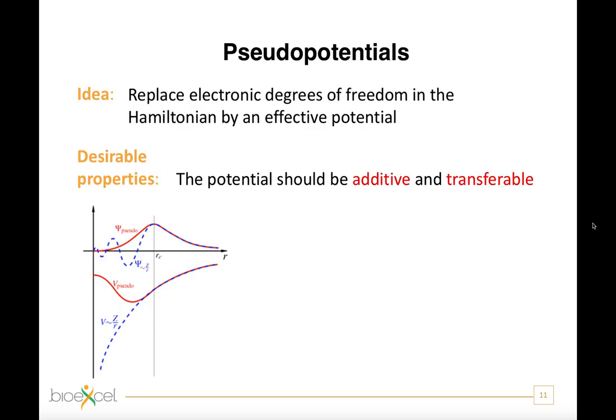The real problem is to accurately describe the wave function for those electrons that are closer to the nucleus, because those wave functions show more oscillation near the nucleus than the ones associated to the outermost electrons.